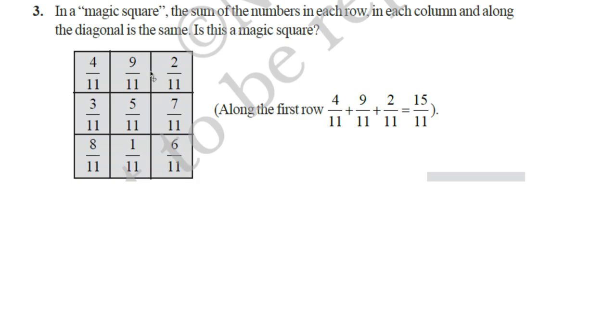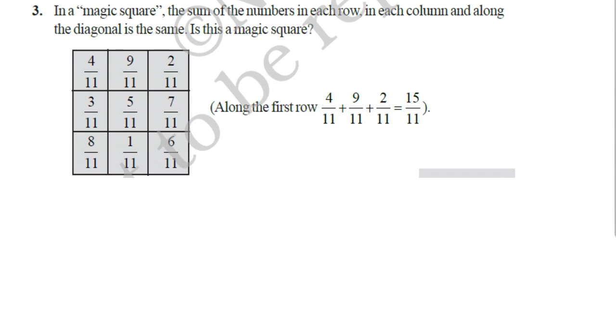Here you have to check the given numbers in the square is a magic square or not. Look at here, for a magic square, you have to add all these in row ways. That is, 4 by 11 plus 9 by 11 plus 2 by 11. That it is given, it is as 15 by 11. Now, second, you add these 3 and third, you have to add this. 8 by 11 plus 1 by 11 plus 6 by 11. Now you have to add column ways. That is, 4 by 11 plus 3 by 11 plus 8 by 11. Find out the answer. Since denominators are equal, simply add numerator and put the same denominator.